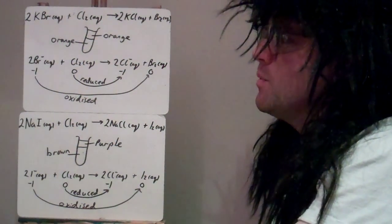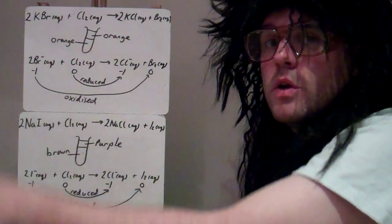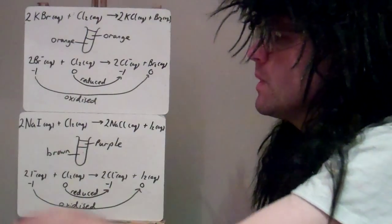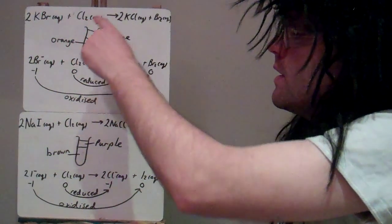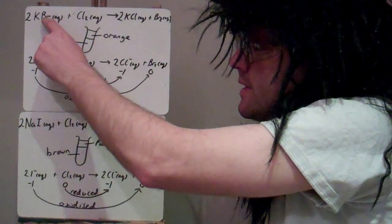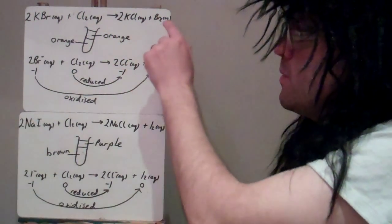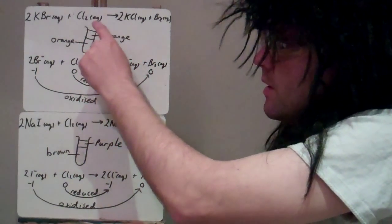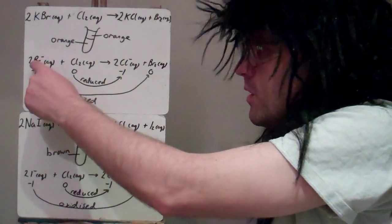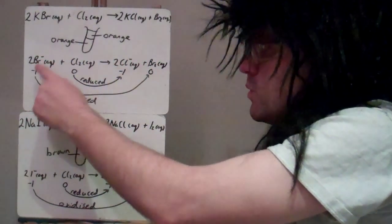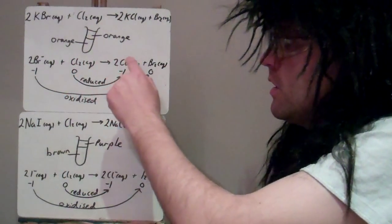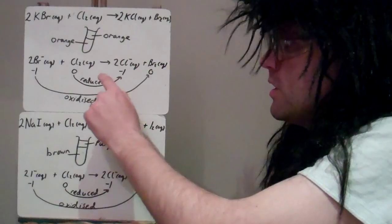Here's another example — potassium bromide reacts with chlorine to make potassium chloride and bromine, because chlorine is more reactive than bromine. The metal ion is always a spectator ion in these reactions. Because we make bromine Br₂, we see orange in both layers. The ionic equation shows bromide ions going from −1 to 0 as bromine, so they're oxidised. The chlorine goes from Cl₂ to chloride, from 0 to −1, so it's reduced.